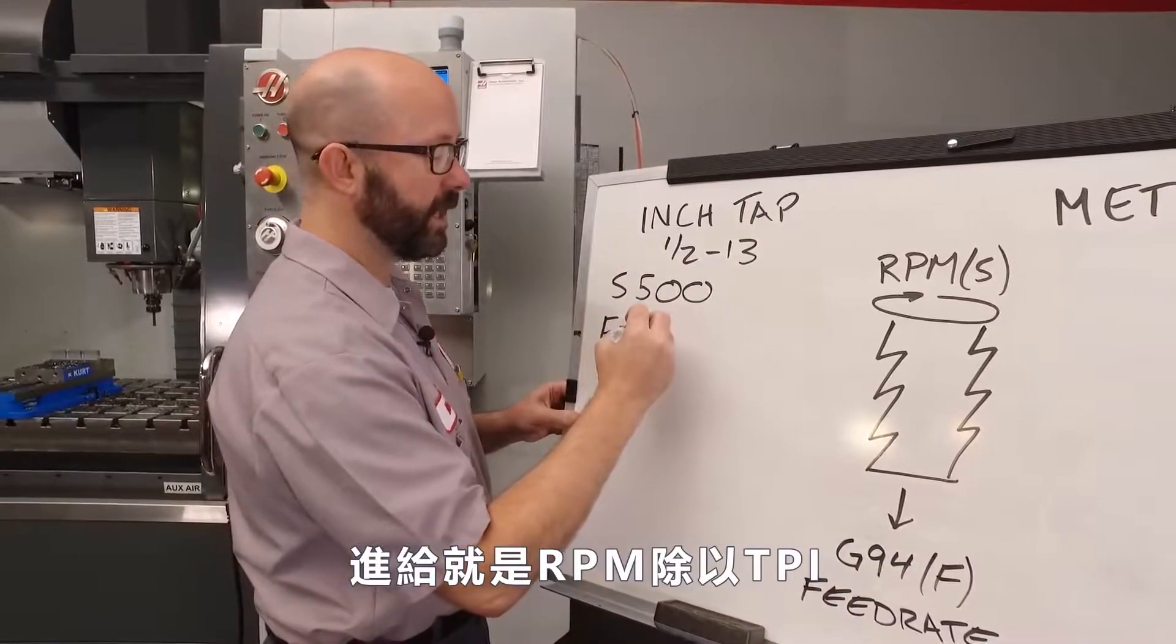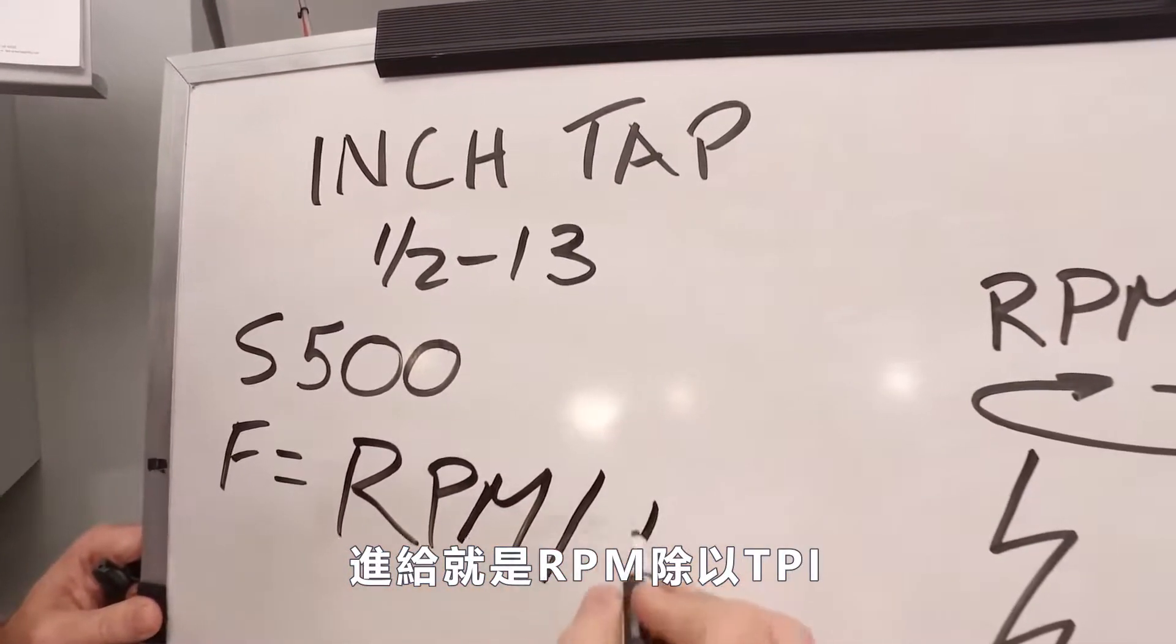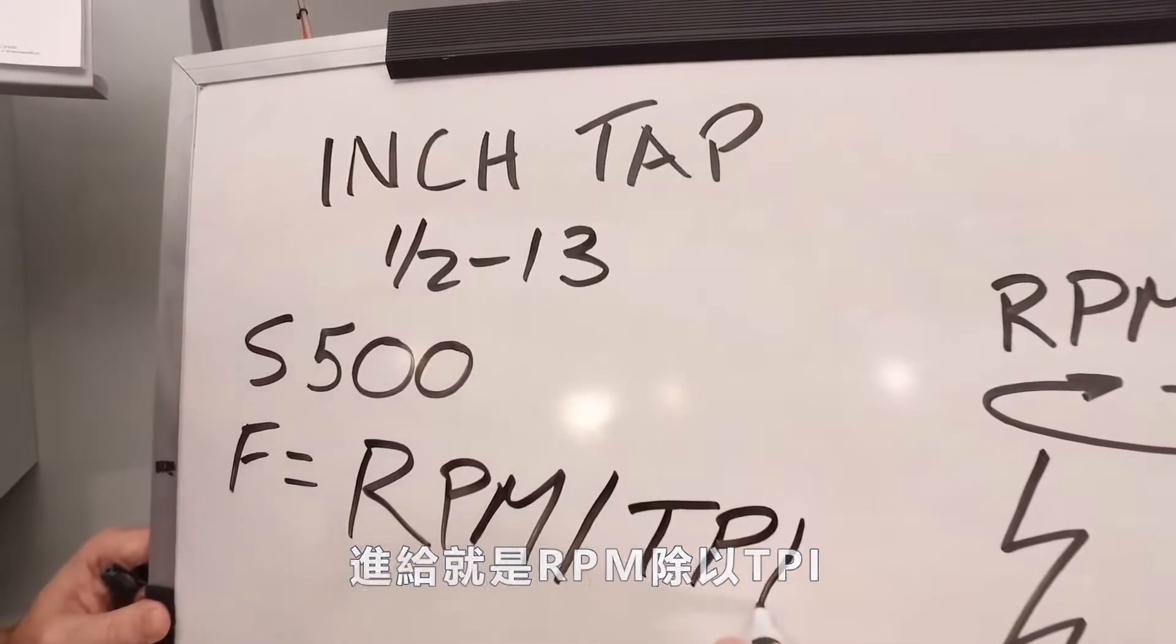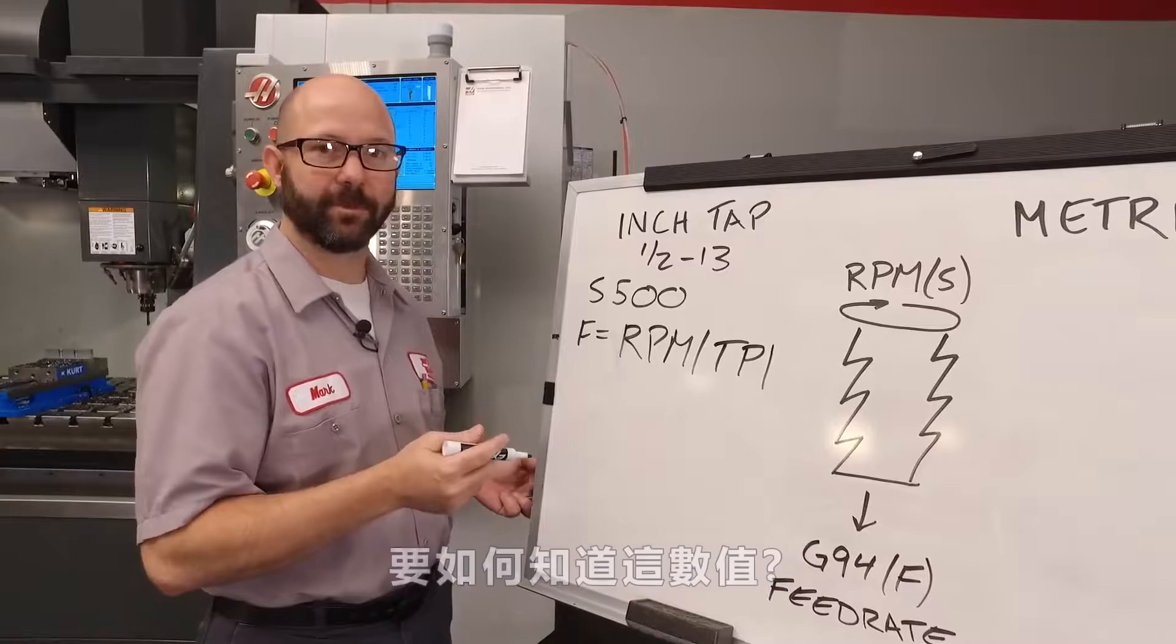Now what's TPI? That's our threads per inch. Where do we get that?